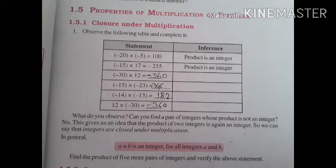First property is closure under multiplication. See the examples. First example: minus 20 into minus 5 is equal to 100. The product is an integer. Second example: minus 15 into 17 is equal to minus 255. Product is also an integer. Third example: minus 30 into 12, output is minus 360. Product is an integer. Fourth example: minus 15 into minus 23, product is 345, which is an integer. Next example: minus 14 into minus 13 is equal to 182.